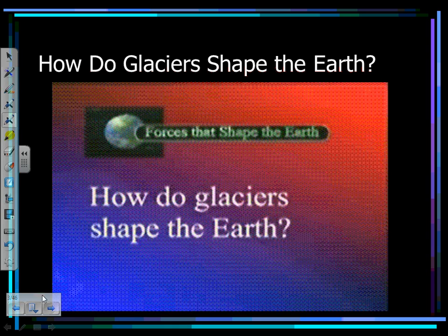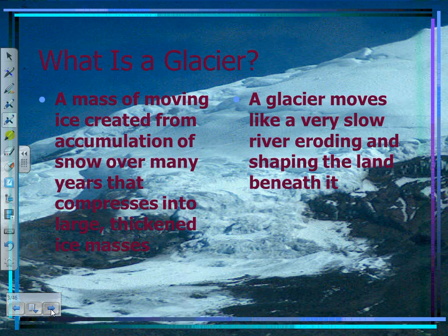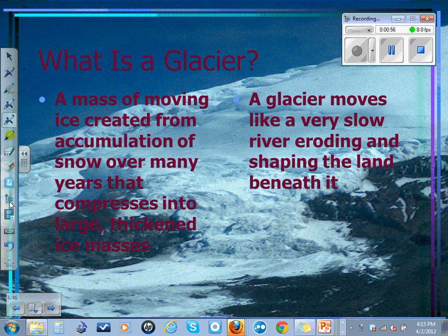How do glaciers shape the earth? A glacier is a mass of moving ice created from the accumulation of snow over many years, compressed into large thickened ice masses. The glacier moves like a very slow river, eroding and shaping the land beneath it.